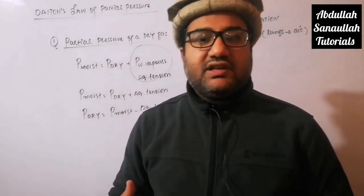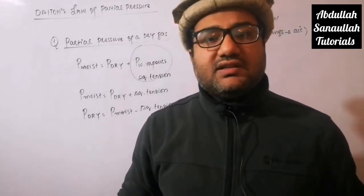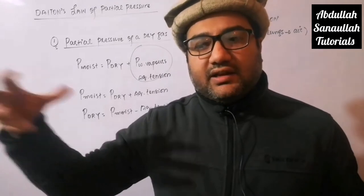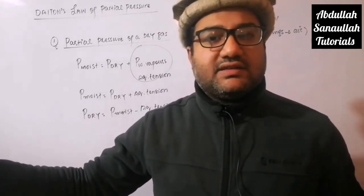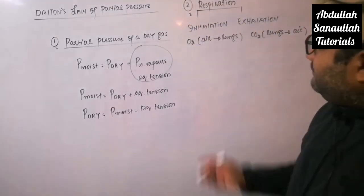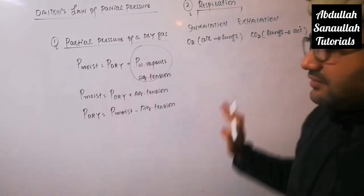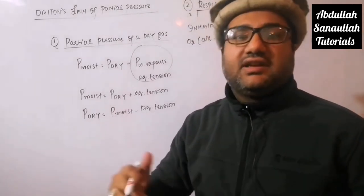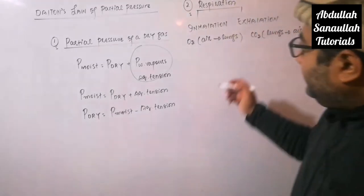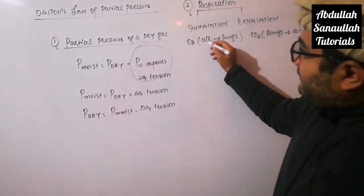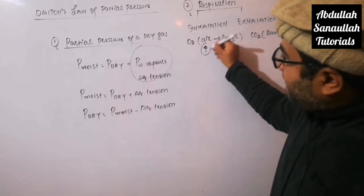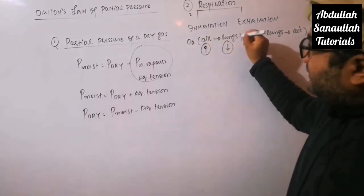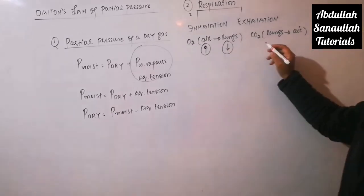Our lungs are spongy in nature — they are not muscular. So the lungs cannot contract or relax on their own to take in or expel gases. That's why the difference in partial pressure of oxygen between air and lungs helps a lot in human respiration. The partial pressure of oxygen in air is higher while in lungs it is low, which assists the inhalation stage.